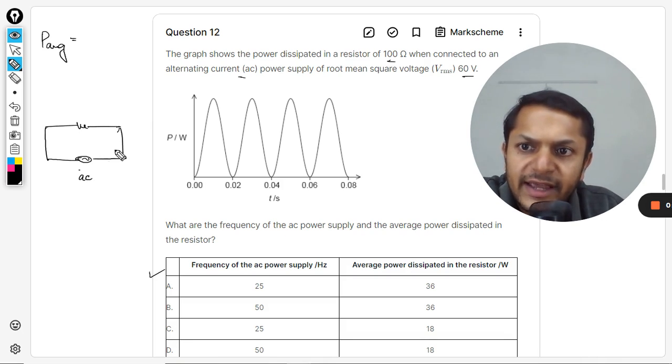This is the alternating current AC and this is the resistance R. So clearly the power supply will be V_RMS square divided by R. So V_RMS is 60 square divided by the resistance which is 100.